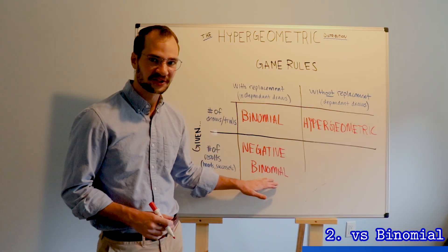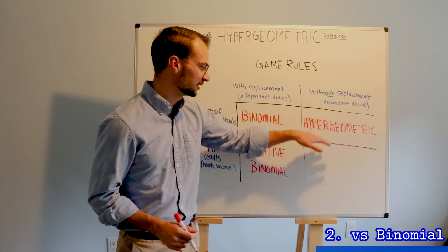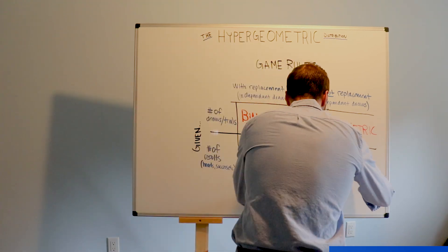The equivalent of the negative binomial, when we don't replace our objects, is just the negative hypergeometric.